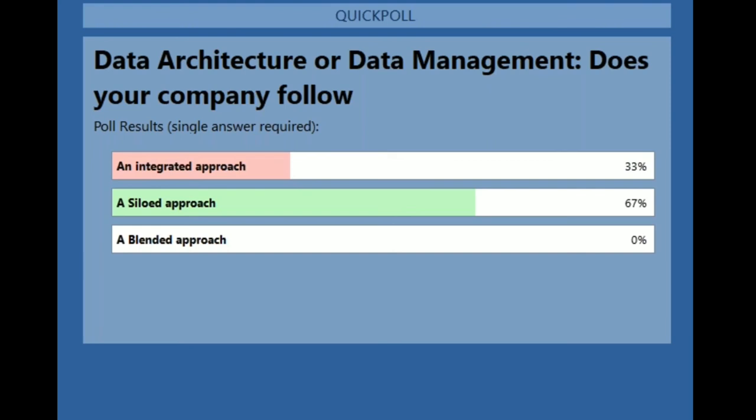A siloed approach may result in a lot of duplicate work for organizations — the same problem being solved in different ways in different places, rather than centralizing and solving the complete problem in a single go. There are two ways of going at it, and the integrated approach is the way forward. The results apparently show all companies are using a blended approach — either siloed or integrated — but we will see this number changing in the coming years, and that's where the energy should be going for organizations right now.